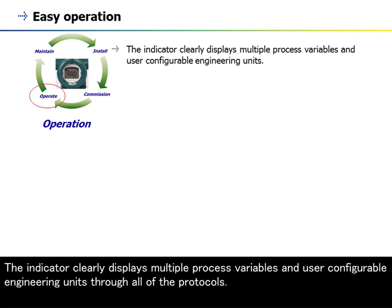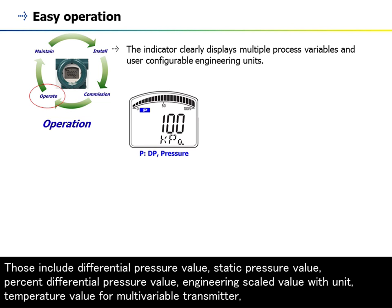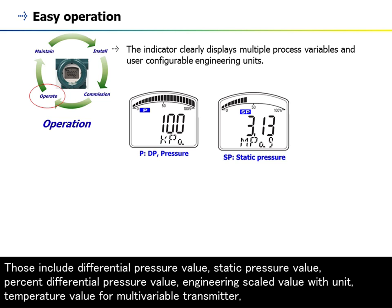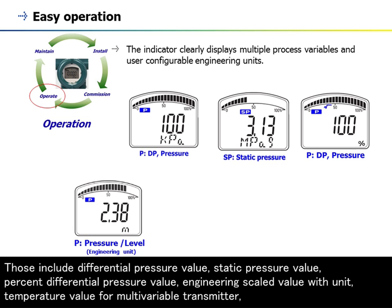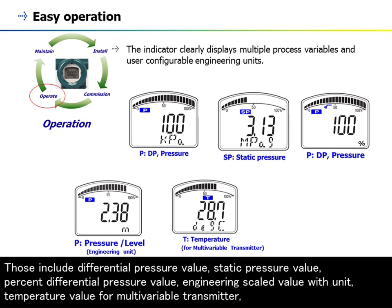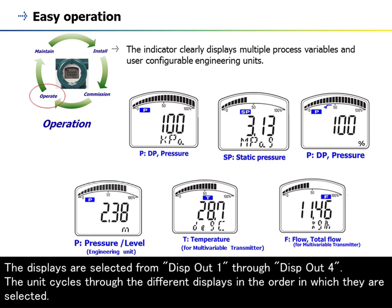The indicator clearly displays multiple process variables and user-configurable engineering units through all protocols. For process value indication, users can select up to four process values for HART or BRAIN protocols. Those include differential pressure value, static pressure value, percent differential pressure value, engineering scaled value with unit, temperature value for multivariable transmitter, flow and total flow for multivariable transmitter, and percent static pressure value. The displays are selected from Dispout 1 through Dispout 4.